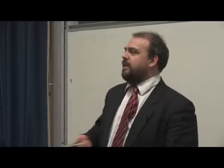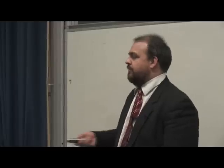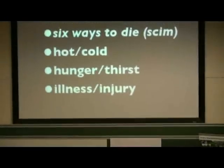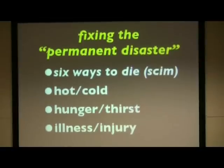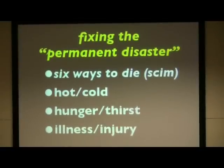This is the permanent disaster. Poverty is like a natural disaster but it's running all the time over most of the planet. Basically there are six things that people die of: they are too hot and too cold, hungry, thirsty, ill, or injured. And this is most of what happens.